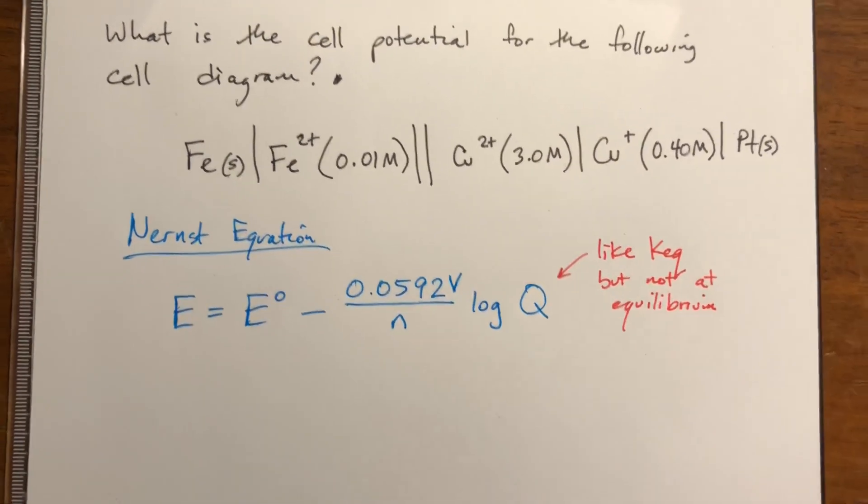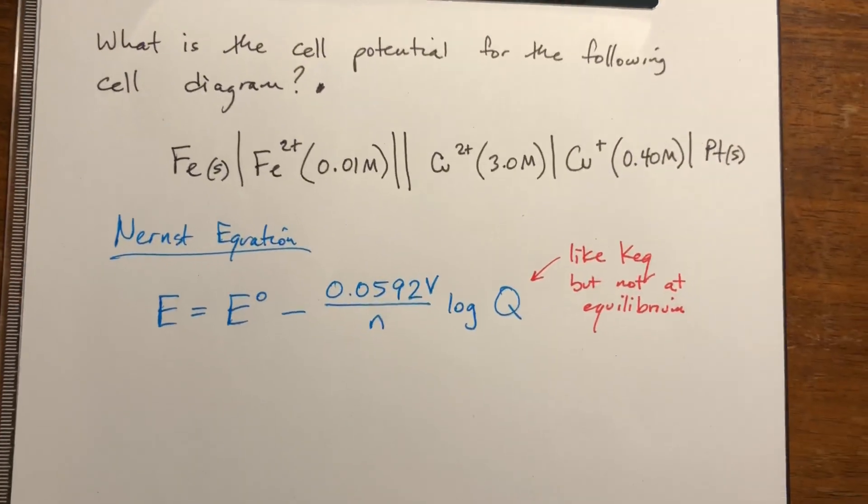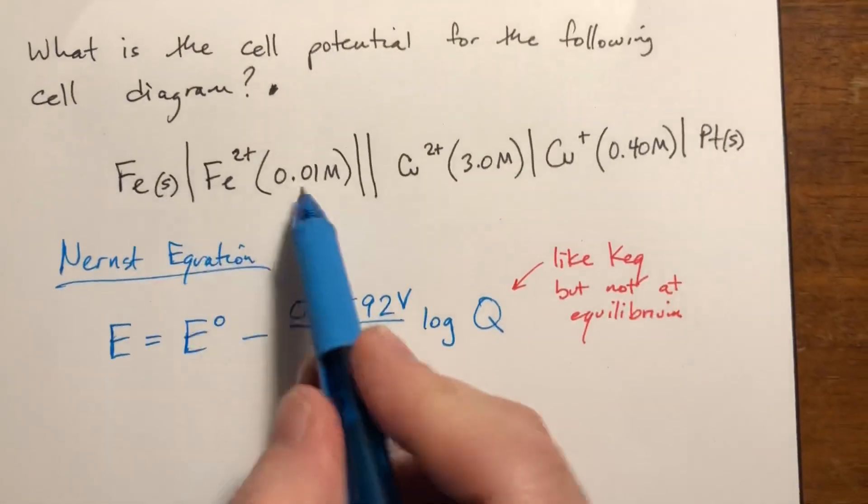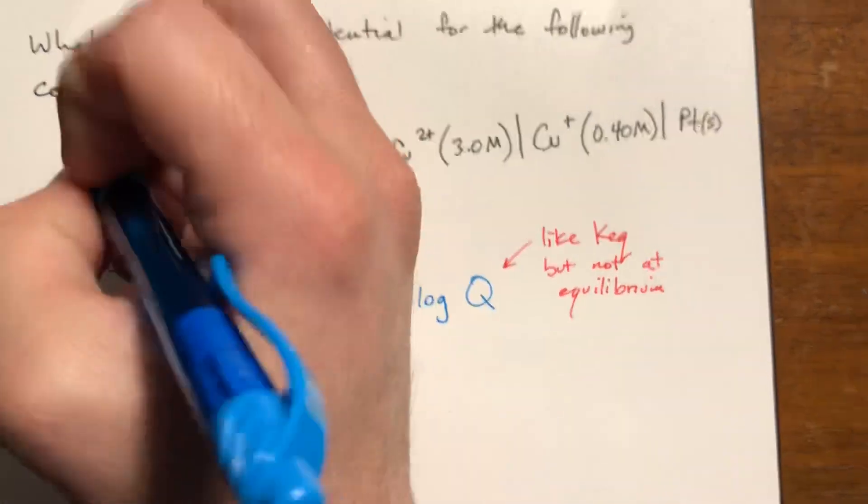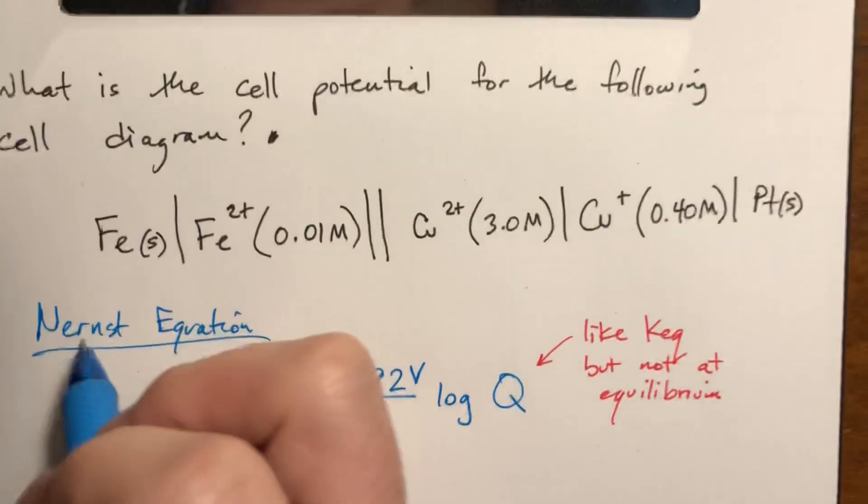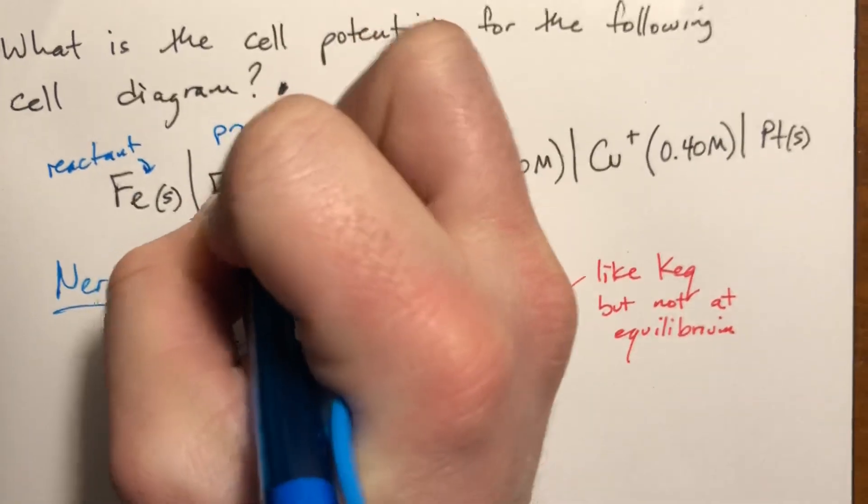Solving for Q is actually kind of the hard part of the problem. So first things first, let's kind of look at how to interpret this as a reaction. Essentially this is one half reaction and this is the other. So this is a reactant, I'm trying to get my camera so you can see, reactant, product.